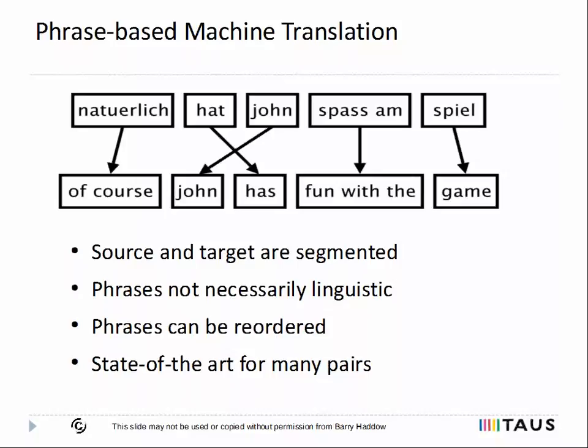So we've mentioned phrase-based MT a few times, and this slide gives a flavor of how it works. This is the first statistical model to really challenge rule-based MT, and it's still state-of-the-art for many language pairs, forming the basis for, for instance, Google Translate. In its pure form, it doesn't incorporate any linguistic knowledge, but the source side is broken up into phrases of varying sizes — although they're not strictly speaking phrases; segments would be a more accurate term — and each of these phrases is translated separately using the translation model. As the decoder builds up the translation, it's free to choose the phrases in any order, although the language model will help guide the system to produce fluent output. And there's also normally some model of phrase reordering. In this example, non-linguistic phrases can be used, such as the German phrase Spaß am, which is translated as fun with the, and phrases can be reordered, reflecting the differing verb order and constraints in the two languages.